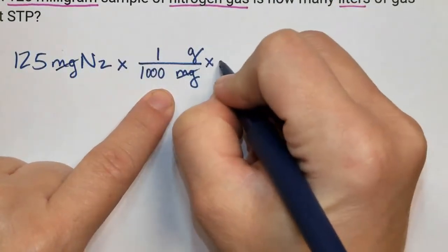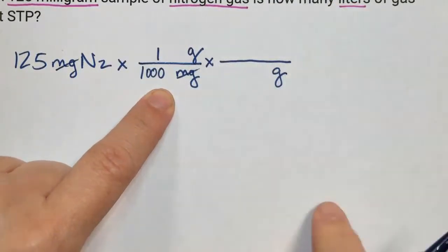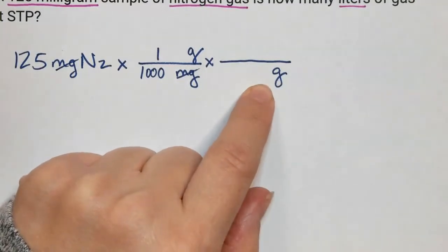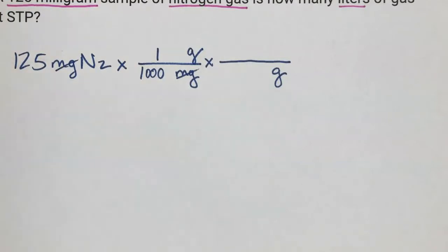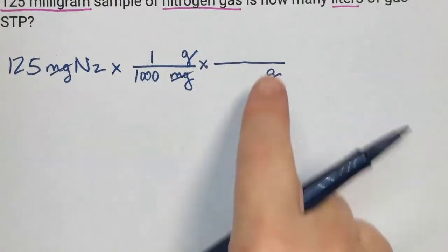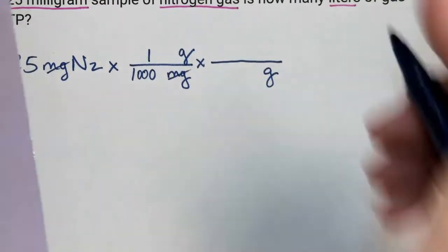I'm at grams times draw a line, and I'm going to bring down grams. Now, when you have grams, go to the periodic table to add up the molar mass. So when I want grams, I'm going to go to the periodic table.